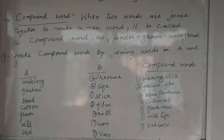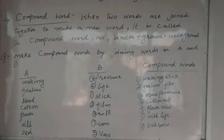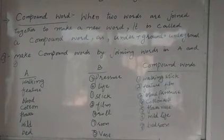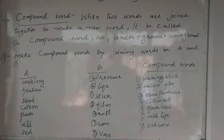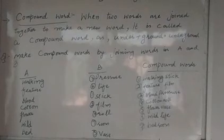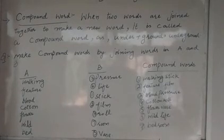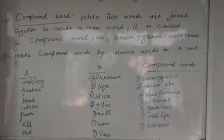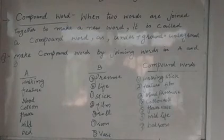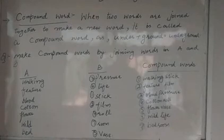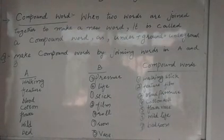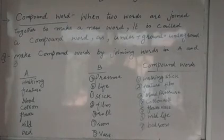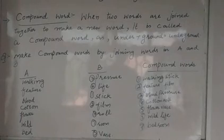तो ये हमने compound words हासल किये, column A को column B के साथ जोड़ के। Compound word हم उस लफ्ज को कहते हैं — when we have two words joined together, we get a new word called a compound word, like under and ground gives us underground. In your textbook on page 33, the compound words formed are: walking stick, feature film, blood pressure, cotton roll, flower vase, wildlife, and bedroom.